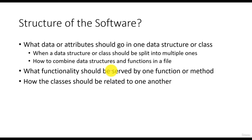Design principles help us by answering different important questions. For example, the first question is: what should go in a particular data structure or a class? We know that any data structure or class has certain member variables or attributes. How to decide what attributes should go in one class? How to decide when a class or data structure should be split? In case you are not using object-oriented programming, how to decide which data structure and functions should go in which file?